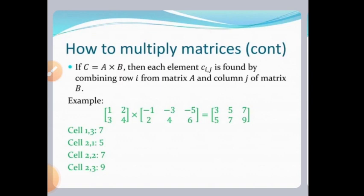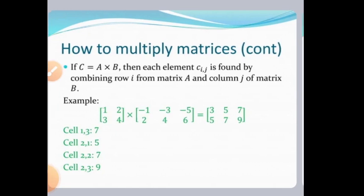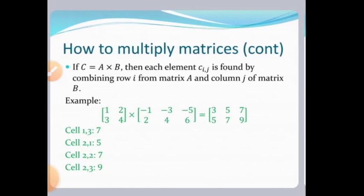So when you multiply these two matrices, we get the result [[3, 5, 7], [5, 7, 9]]. This satisfies the condition, and the answer matrix has order 2×3. I hope you understand this. Thank you.